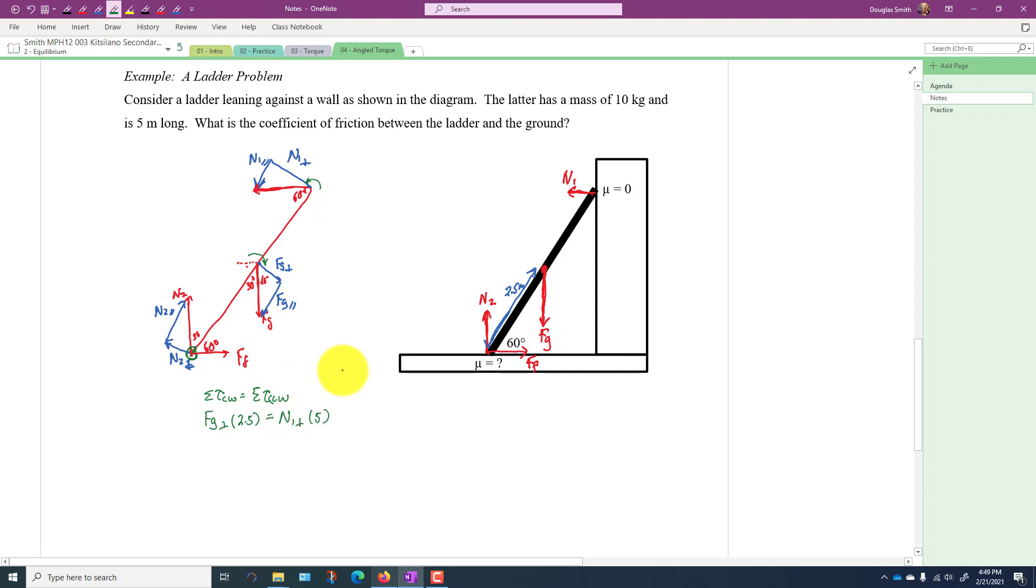So we're getting somewhere and we can actually find Fg perpendicular because we know Fg is equal to, we're told it's 10 kilograms, so that's equal to 98 newtons.